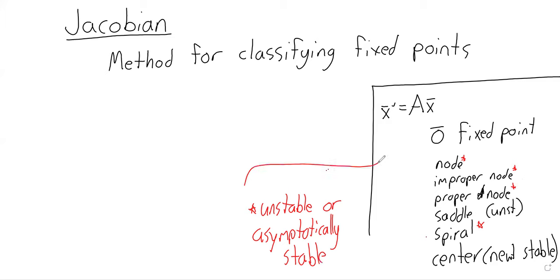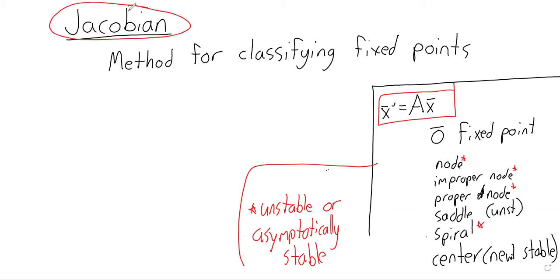Saddles are always unstable, and centers are always neutrally stable. But these other fixed points could be either unstable or asymptotically stable, depending on the eigenvalues. Negative eigenvalues breed stability; positive eigenvalues breed instability. But of course, this is a very specific type of differential equation, so we can't usually use this method. The purpose of the Jacobian is to let us take all of that material and apply it to other systems and other fixed points.